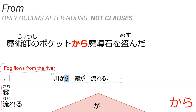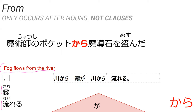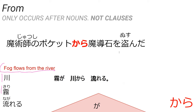Just a random tidbit — kawa can go here, or it can also go over here, because Japanese allows a lot of movement. So your sentence is 100% correct and so is this one: 'Kiri ga kawa kara nagareru.' Both of those have the exact same meaning, no difference.